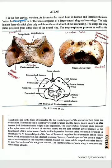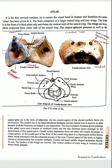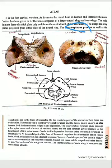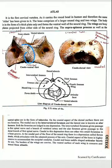Let's start from the atlas. The atlas is the first cervical vertebra. The atlas comprises of the larger neural ring and the two wings. The body of the atlas is in the form of a thick plate only. The wings of the atlas are the bony plates projected on either side of the neural ring. The supra-spinous process as well as the ventral spine are in the form of tubercles — this is the ventral tubercle and this is the dorsal tubercle.